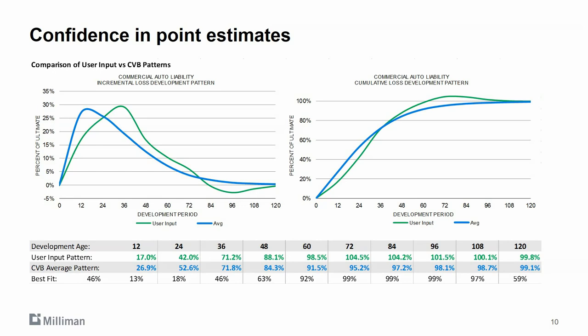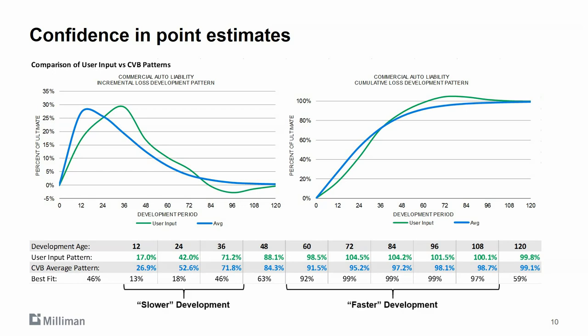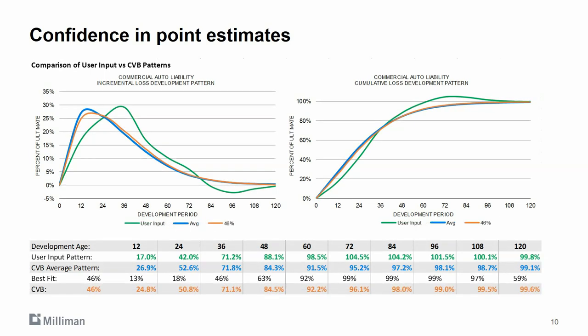While a single percentile can often provide a better fit than the average, you might find that your pattern is slower than average in early development periods and faster in later periods, or vice versa. In this situation, a single percentile may be better than average, but only marginally better. Here is where the real power of using percentiles allows you to customize your benchmark pattern to the features of your data by blending patterns.